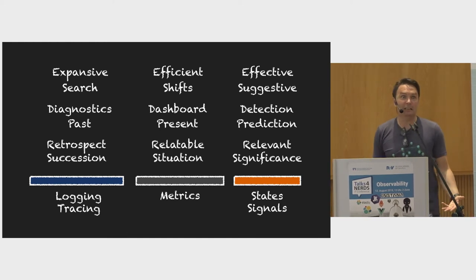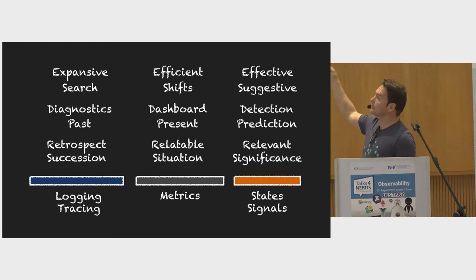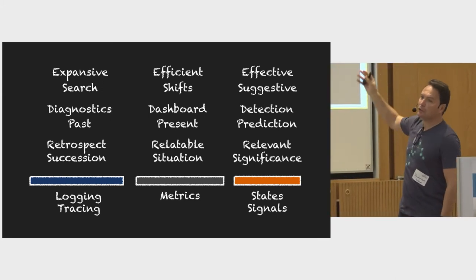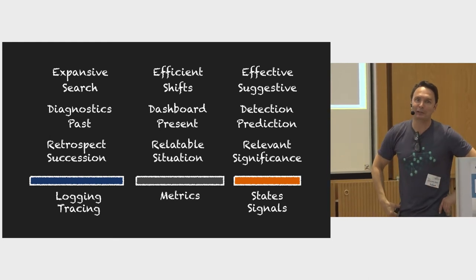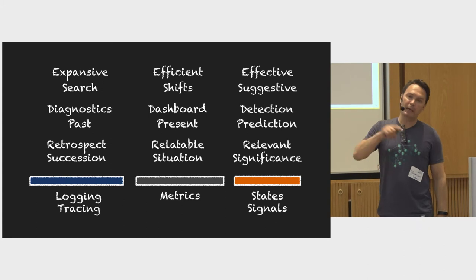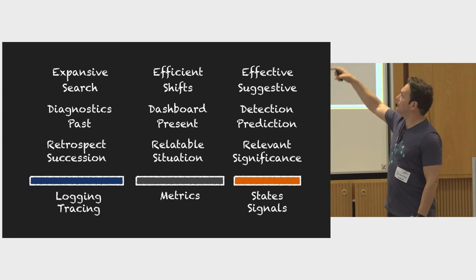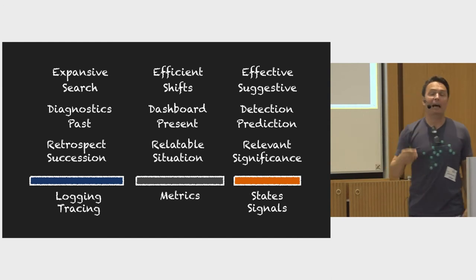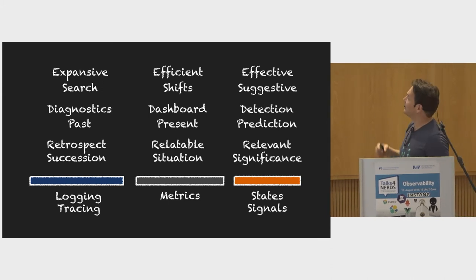Signals and states are effective. They're suggestive. It's easy to do detection with them, and prediction is very easy with them. They're relevant, and because it's a signal, it should be significant — you signal significance. Metrics are still there: signals will eventually generate metrics themselves, because people will want to know how many fires did you send yesterday. You can have a metric on a signal, not a metric that is kind of a signal. Someone asked me for my opinion, and that's where I think we're going.